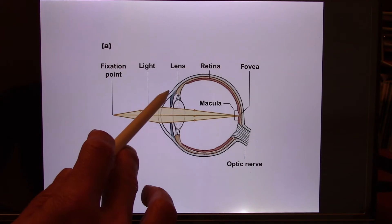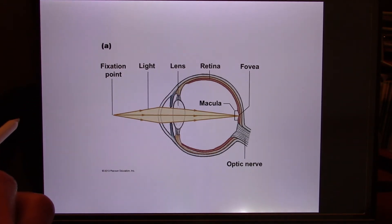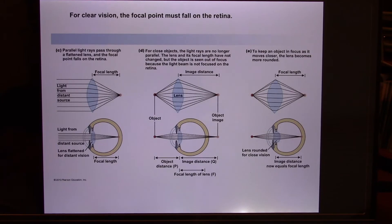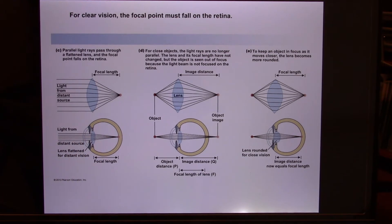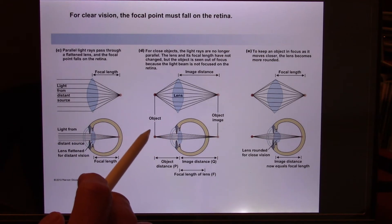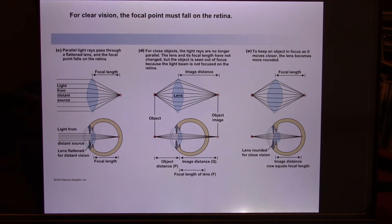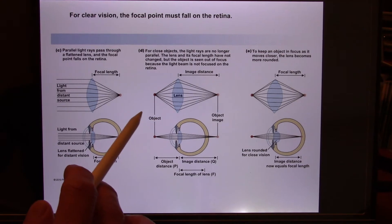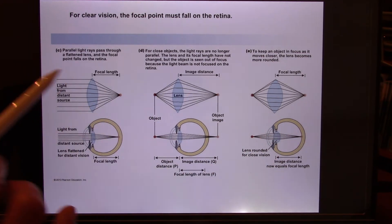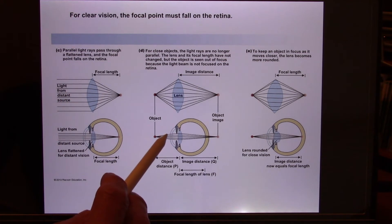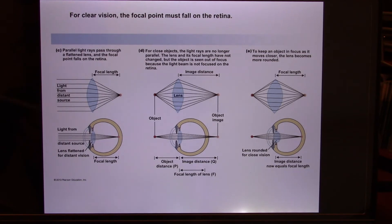Light must focus perfectly on the retina. It passes through the cornea — where you place contact lenses — and then through the lens, which changes its curvature to focus the light. Ideally the light focuses right on the retina, but people with near-sightedness can't focus perfectly. They need a concave lens to first diverge the light so it eventually focuses on the retina. LASIK surgery corrects this by changing the curvature of the cornea to replace the need for corrective lenses, with about a 95% success rate.